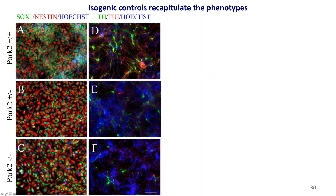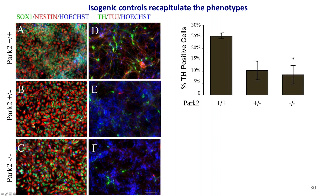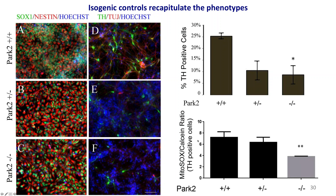At this point we were excited, but it wasn't 100% certain whether the phenotype was caused by the mutation or by the different genetic background of patients. So we turned to the isogenic controls. With wild-type, heterozygous, and homozygous knockout lines, we see exactly the same phenotype: reduced TH-positive cells upon dopaminergic differentiation and reduced mitochondrial volume fraction in the homozygous knockout compared to wild-type. This allows us to use this isogenic line for primary mechanistic screening and patient cells for secondary validation.